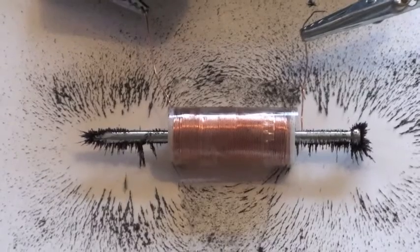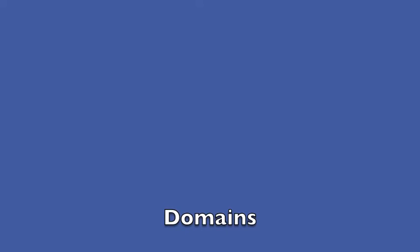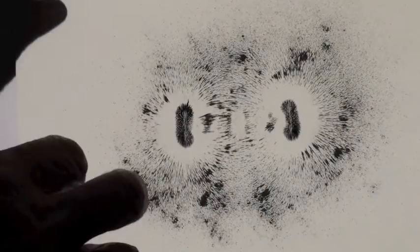We start with a general explanation and domains. All magnetic fields, including those of familiar bar magnets, are caused by moving electric charges. Creating the field around a permanent magnet are the moving charges of electrons within atoms within the material.